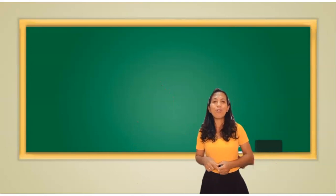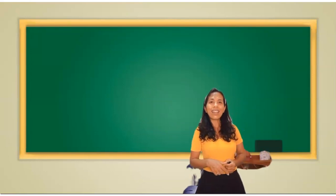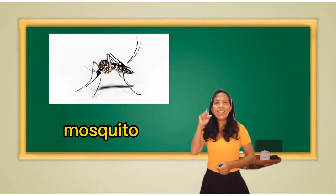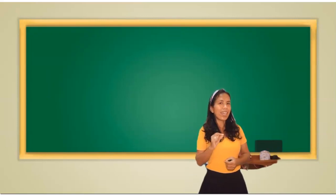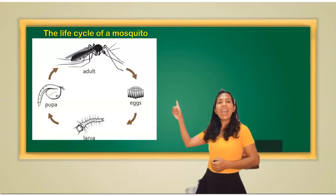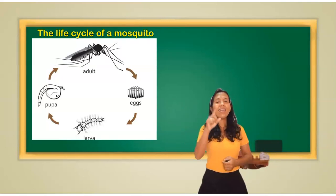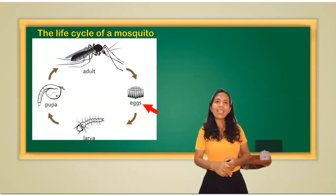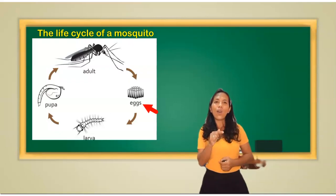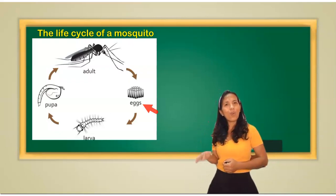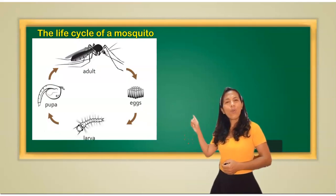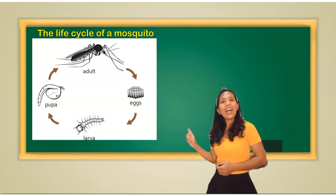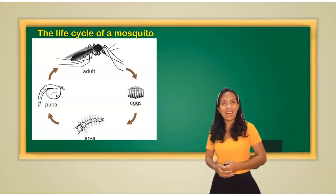Let's look at the mosquito life cycle. The first stage of the mosquito life cycle is egg. The female mosquito lays eggs on the surface of the water. Then the egg will hatch into a larva.